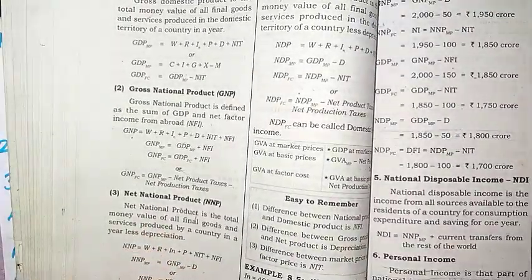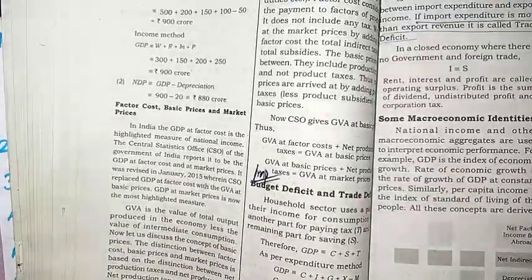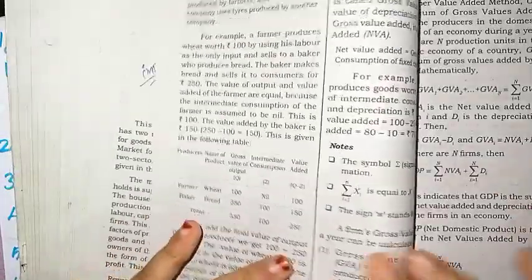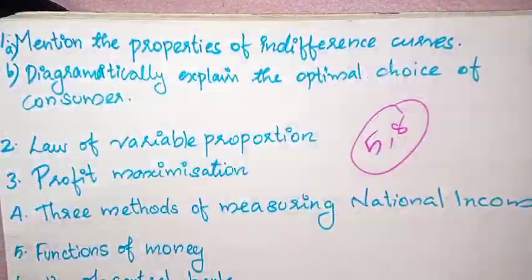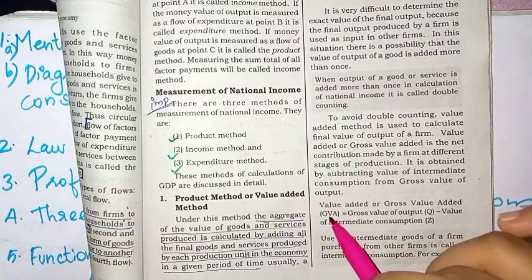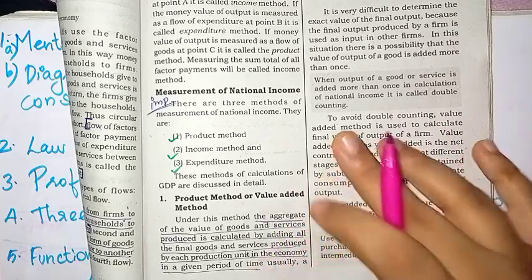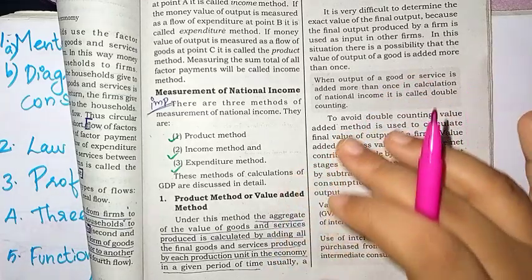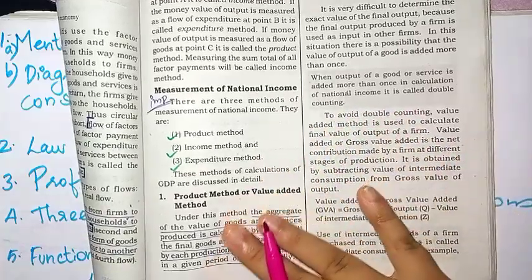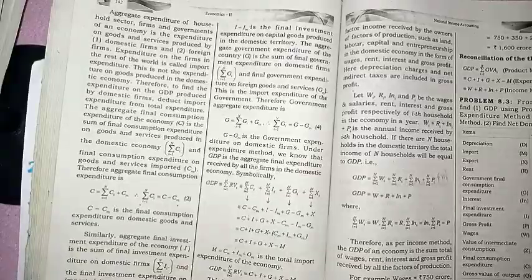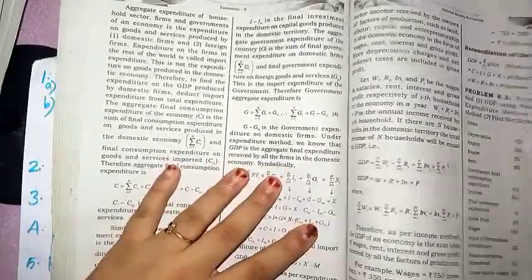In the second chapter, national income measurement — we have three methods: the product method, the income method, and the expenditure method. These three methods are very important. The first is the product method, also called the value added method, under which the aggregate value of goods and services produced by all final goods and services is calculated.